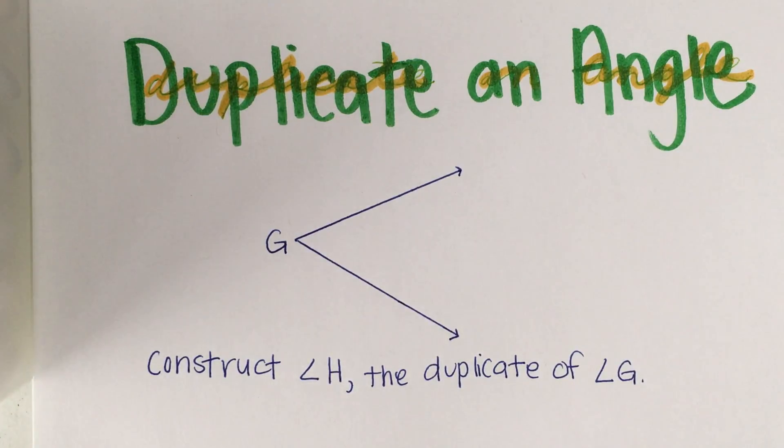In this video we're going to take a look at how to duplicate an angle. We want to construct using just a straightedge and a compass to make a copy of angle G, and we're going to label it angle H.